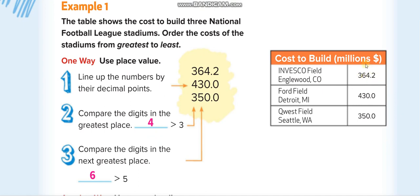The three costs are $364.2 million, $430 million, and $350 million. You have to order them from greatest to least. Look at the first digit: the number four and the remaining all start with three, so four is greater than three.